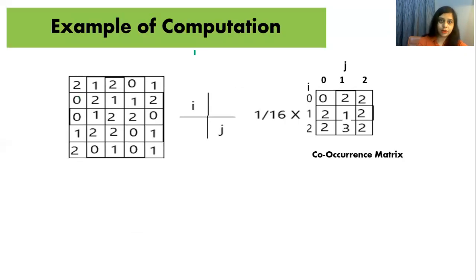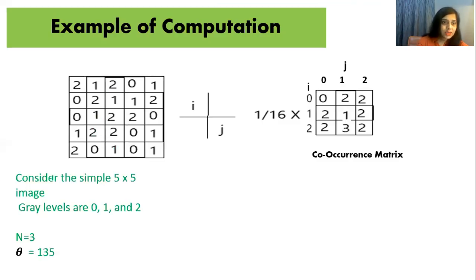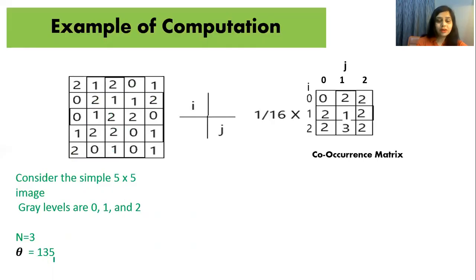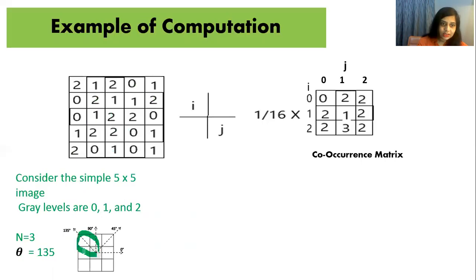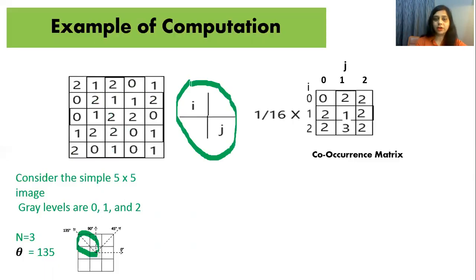Let's solve another example. Consider a simple 5-by-5 image with only three gray levels: zero, one, and two — so n equals three. We are taking theta equals 135 degrees, which means we consider this diagonal alignment of pixels.